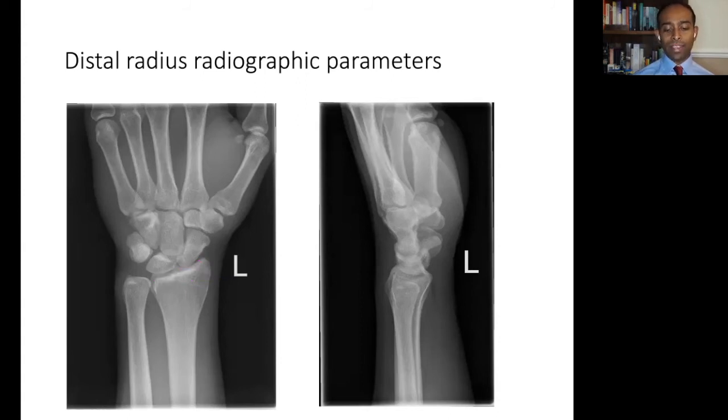The radial height is the vertical distance from the radial styloid to the ulnarmost edge of the articular surface. On average, this height is in the region of 11 millimeters. Ulnar variance is the relative length of the ulna to the radius, and this can be measured from the articular surfaces. On average, this is plus or minus 2 millimeters difference.